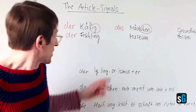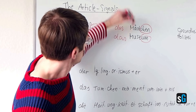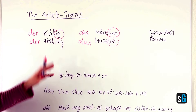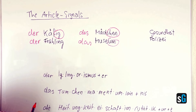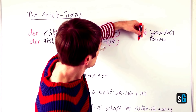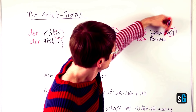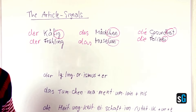MÄDCHEN — let's see if we find something that looks like the ending of MÄDCHEN. I can see there is UM here, so MÄDCHEN also is DAS. So, Gesundheit and Polizei — we will find them here. You see HEIT and later on you see EI. So both of them are feminine because I find the signals at the end.